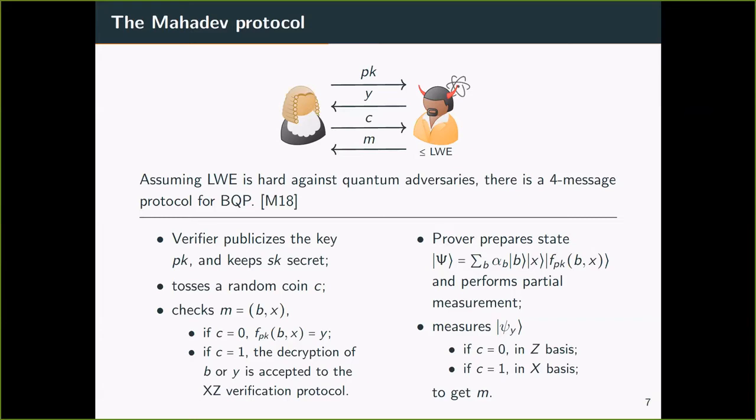The Mahadev protocol is a combination of the XZ Hamiltonian protocol with a verifiable remote XZ basis measurement procedure, which she calls the measurement protocol. The idea is as follows. After receiving the instance, the verifier samples the local term and the key pair depending on the term. The public key, PK, encodes the so-called trapdoor claw-free or trapdoor injector function. The prover prepares a ground state and queries the function at PK on the state. The verifier fixes the state by requesting a measurement on the image register.